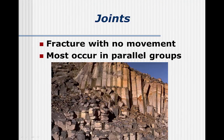Like faults, joints are breaks in rocks. However, in this case, no movement has occurred. Most visible joints are formed from the cooling of thick layers of basalt. As the rock contracts when it cools, it fractures into tall columns.